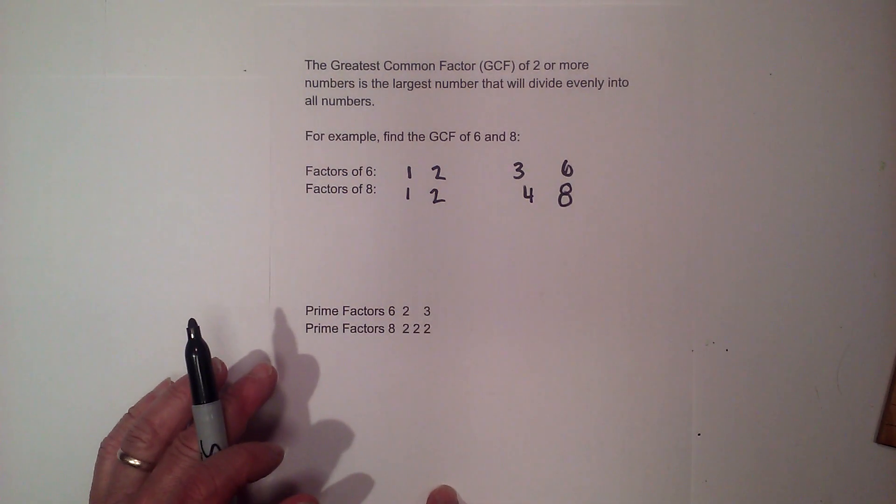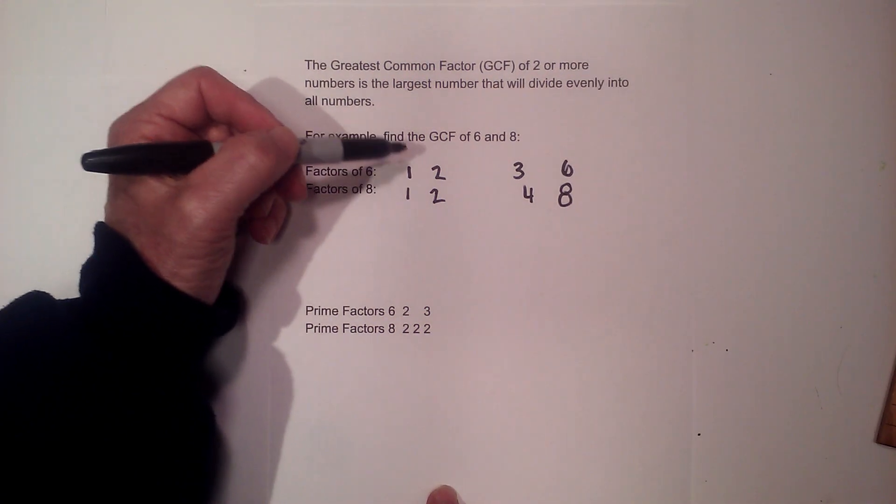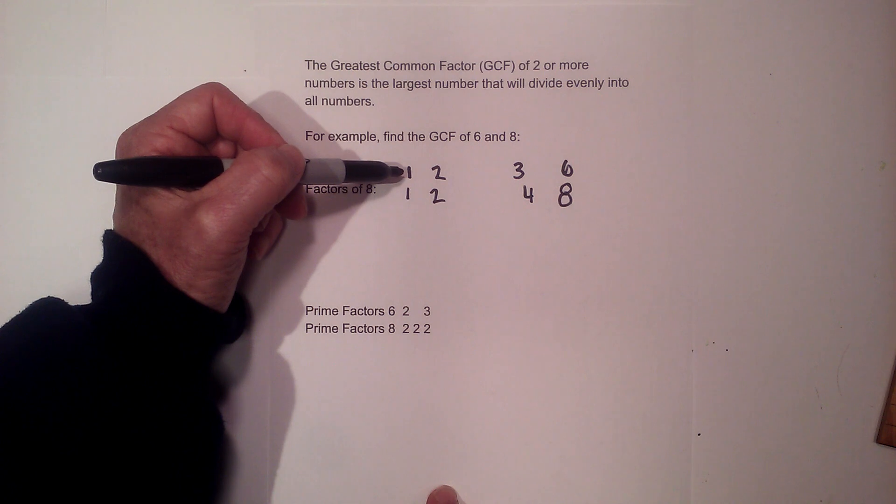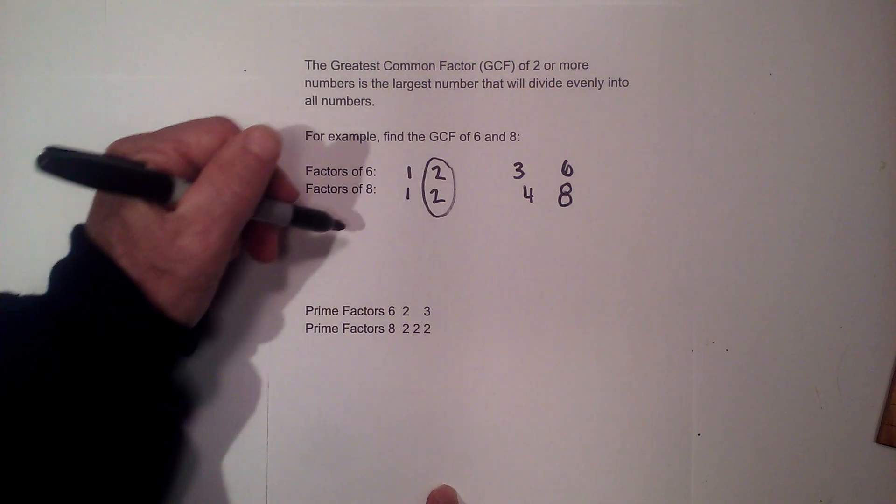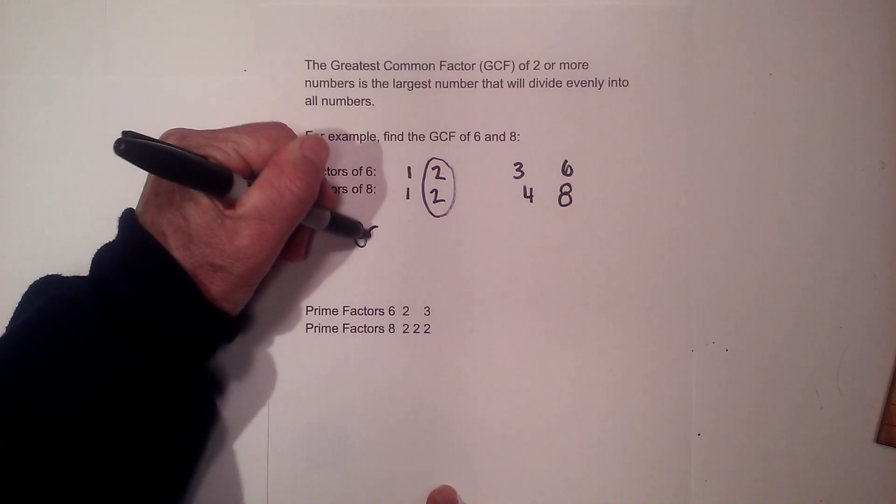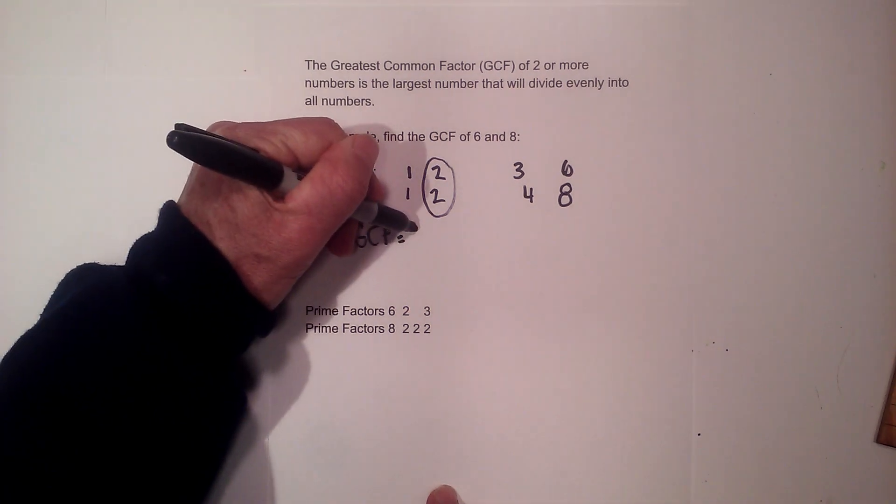So now to find the greatest common factor I find the largest number that's common on each list. 1 is common but 2 is larger than 1 so 2 is the GCF. So the GCF equals 2.